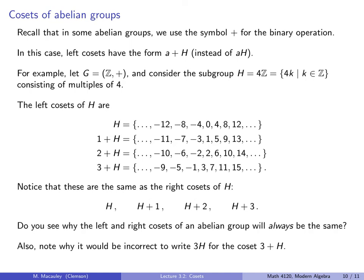Finally, note why it would be incorrect to write 3H for the coset 3 + H. If I write 3H, that would be interpreted as multiplying all elements of H by 3, giving multiples of 12 — that is the subgroup 12ℤ, which is a different subgroup entirely. So we must use additive notation 3 + H, not 3H.